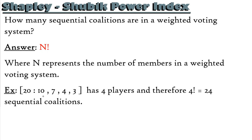Looking at this example, we see there are four players. Player 1 has 10 votes, player 2 has 7, player 3 has 4, and player 4 has 3. With four players, 4 factorial is 24, so we have 24 sequential coalitions.